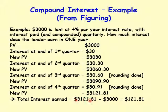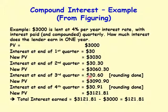The total interest earned is the final value minus the original principal: three thousand one hundred twenty-one dollars and eighty-one cents minus three thousand dollars equals one hundred twenty-one dollars and eighty-one cents. You can also verify by adding the quarterly interest amounts: thirty dollars, thirty dollars and thirty cents, thirty dollars and sixty cents, and thirty dollars and ninety-one cents.